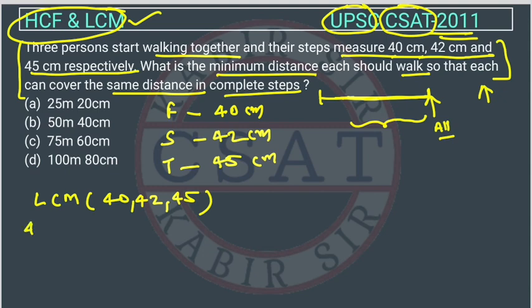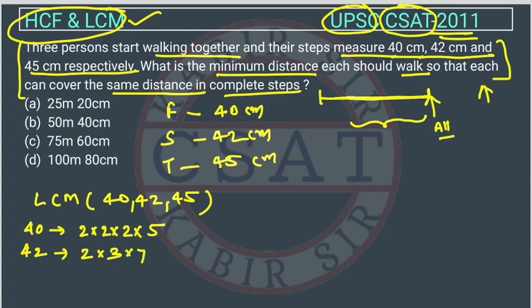The prime factorization of 40 is 2 × 2 × 2 × 5, which is 2³ × 5. The factorization of 42 is 2 × 3 × 7. And the factorization of 45 is 3² × 5.